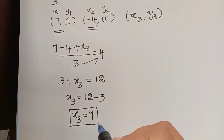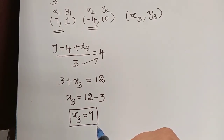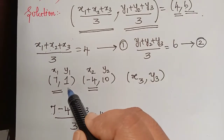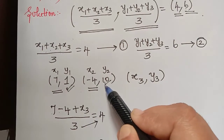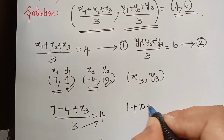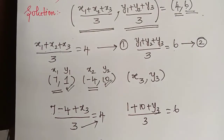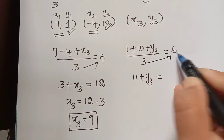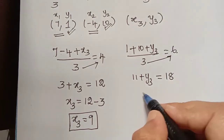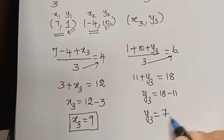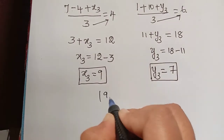In a similar way we find the value of y3. From equation 2: y1 plus y2 plus y3 divided by 3 equals 6. Substituting y1 as 1 and y2 as 10: 1 plus 10 plus y3 divided by 3 equals 6. So 11 plus y3 equals 3 multiplied by 6, which is 18. Therefore y3 equals 18 minus 11, so y3 equals 7. The third vertex is (9, 7).